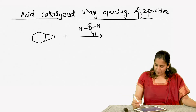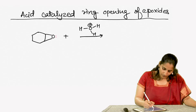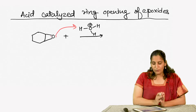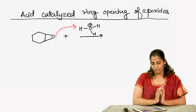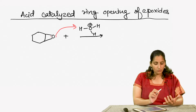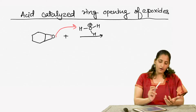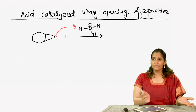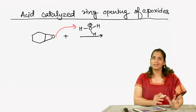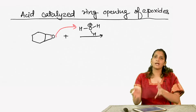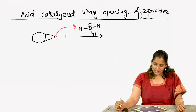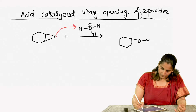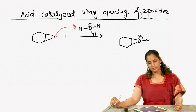The first step is that the lone pair of the oxygen is going to get protonated. Whenever you have an oxygen in the molecule — for functional groups like alcohols, ethers, epoxides, and carbonyl functional groups — when put in an acid, one of the first steps in any reaction mechanism is that oxygen will get protonated.